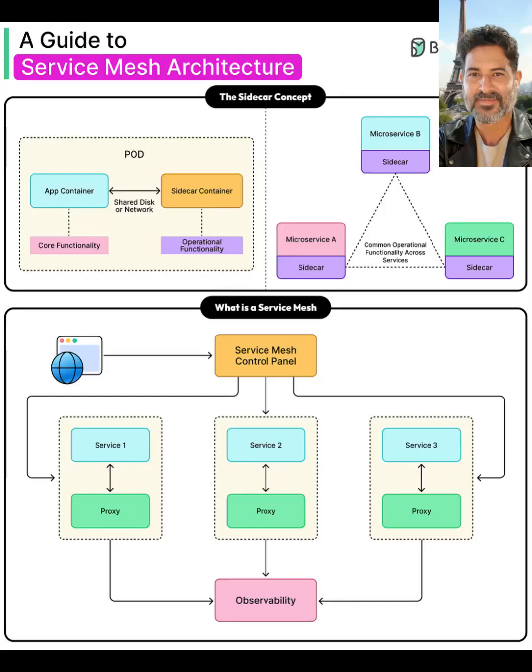A service mesh is a dedicated infrastructure layer that handles how microservices talk to each other, so application teams can focus on business logic instead of networking concerns.